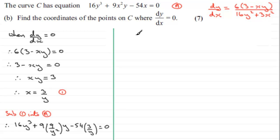If we clean this up, we've got 16y³, and then for this one here, we've got 9 times 9, which is 81, and this y will cancel into the y², leaving us with a y in the denominator. So we've got plus 81 over y. And then minus 54 times 3, that gives us 162 over y. So we've got minus 162 over y equals 0. We can group those terms together: 16y³ minus 81 over y equals 0.